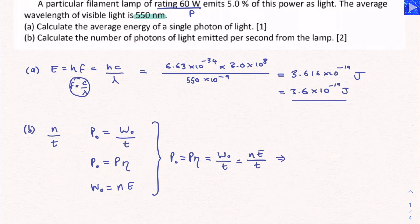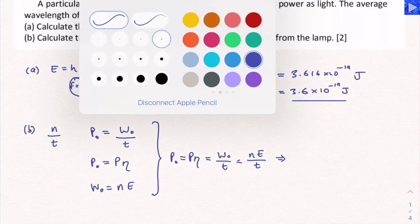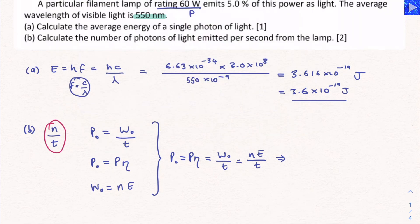This is equal to, from my equation, w_o over t, and w_o is equal to n times E over t. We want to work out n over t. This thing that I just wrote down over here on the left, so that we know what we're looking for. That's in the right hand side of this equation. Therefore, n over t is going to be equal to P times the efficiency divided by the energy of each photon.